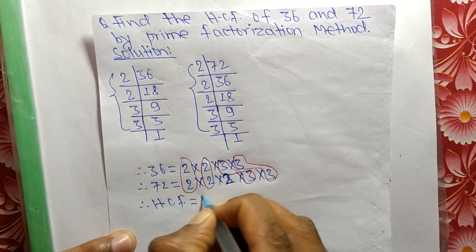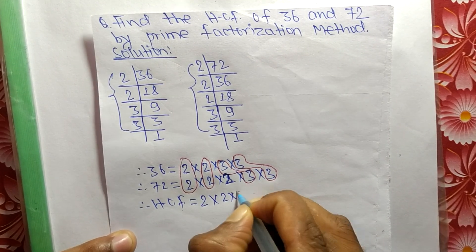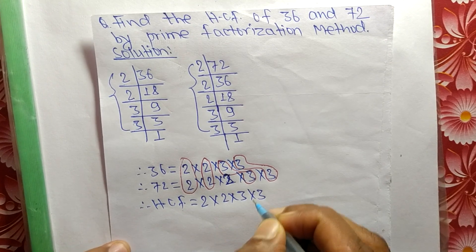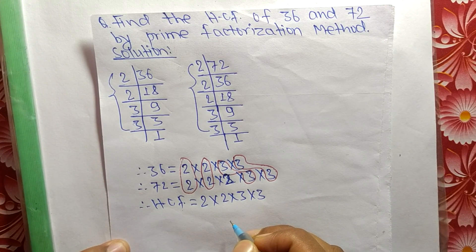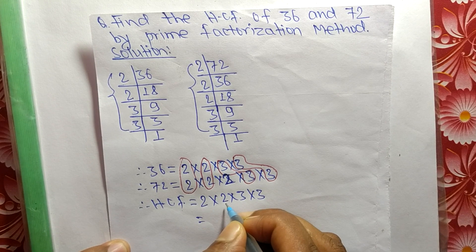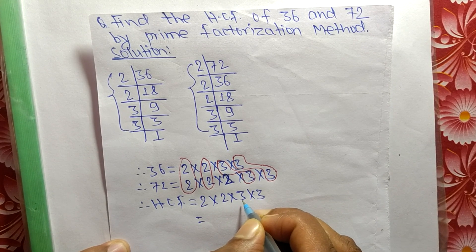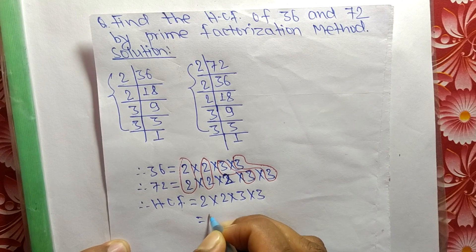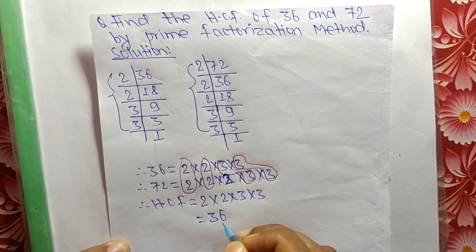It is 2 times 2 times 3 times 3, the product of all the common factors. So the product is 2 times 2 equals 4, 4 times 3 equals 12, and 12 times 3 equals 36.